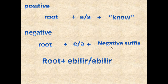I'm not going to teach the negative form of 'can' and 'may not' and 'not being able to' — that will be the subject of another video, as this is going to be very long. So here we have: root + 'ebilir' or 'abilir'. We have the verb 'bil' here, and we have this 'geniş zaman' form of 'bil'.